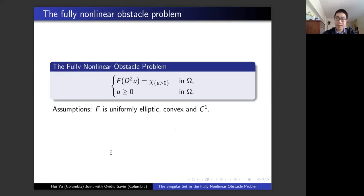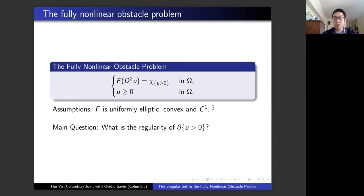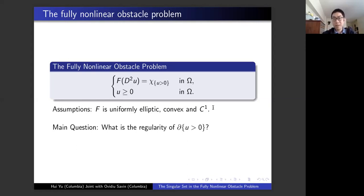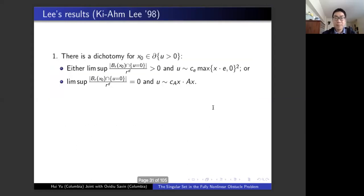The main question is again what happens to the free boundary. Ideally, you want to recover the same nice picture as for the classical obstacle problem — the balloon, the string, the two-dimensional piece. It turns out a lot of that picture can actually be recovered in this fully nonlinear case. Most of the results known for this operator were done by Qian Li in his thesis in 1998. He shows there is a nice dichotomy for free boundary points even in this fully nonlinear problem.